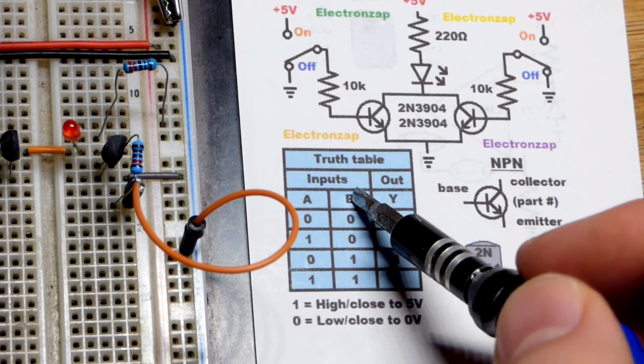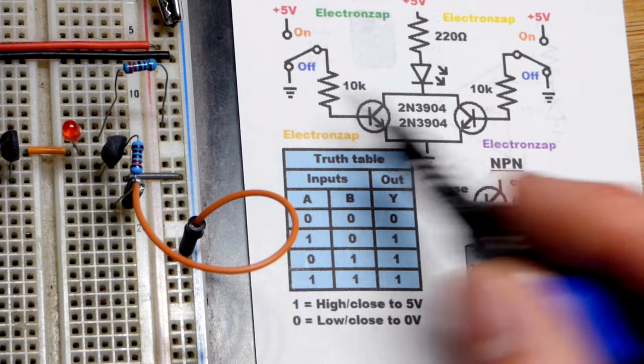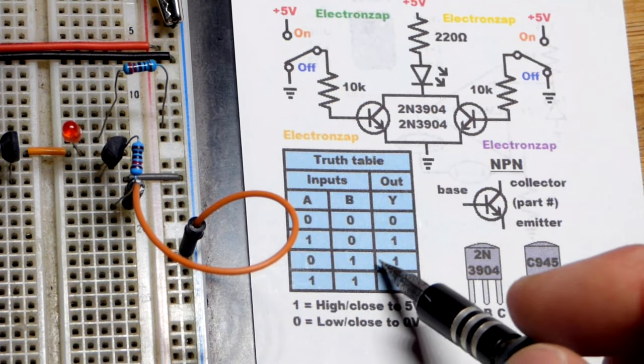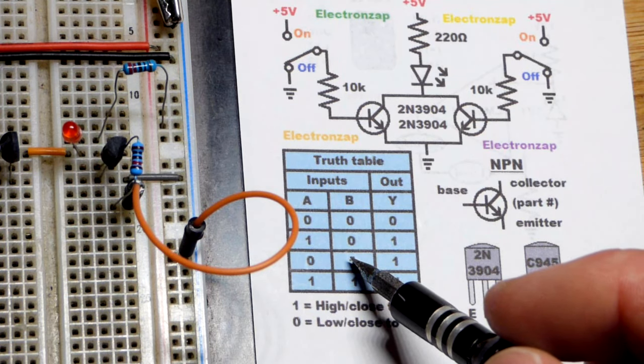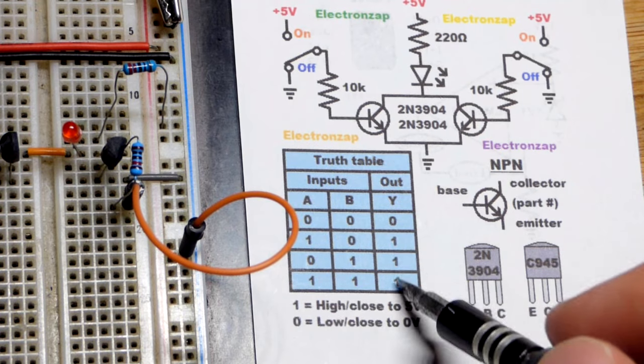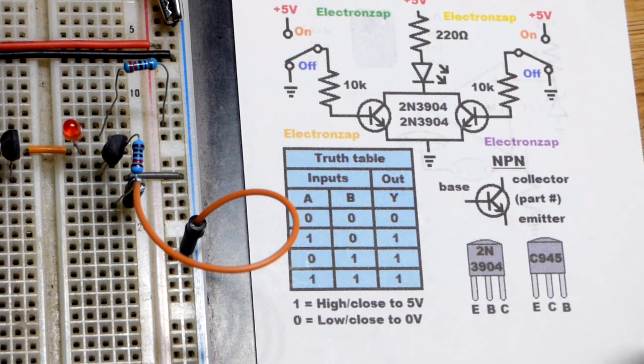Inputs A and B. Maybe we could have more transistors doing this. As many as you want. But, as long as one of them is on, or even all of them, whatever, two of them, three of them, however many, as long as at least one is on, the output is going to be on. That's what makes it an OR gate.